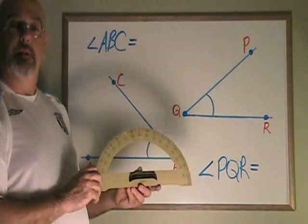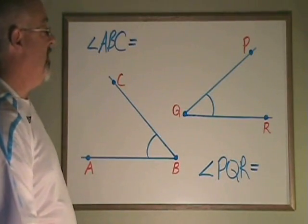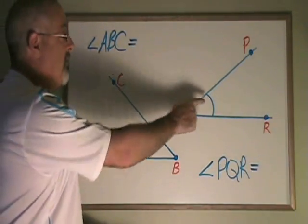But there is a reason why there are two sets of numbers on a protractor. That reason has to do with whether we are measuring an angle that opens to the left or one that opens to the right.